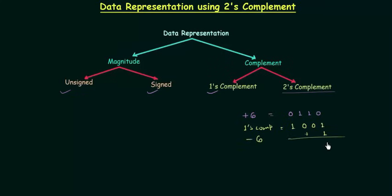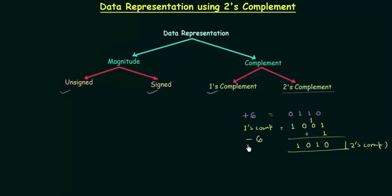1 plus 1 is 0 with carry 1. 1 plus 0 is 1. We have 0 and 1. So 1, 0, 1, 0 is the two's complement of 0, 1, 1, 0, and therefore 1, 0, 1, 0 is minus 6. Because in two's complement we represent a negative number by taking the two's complement of the positive number.